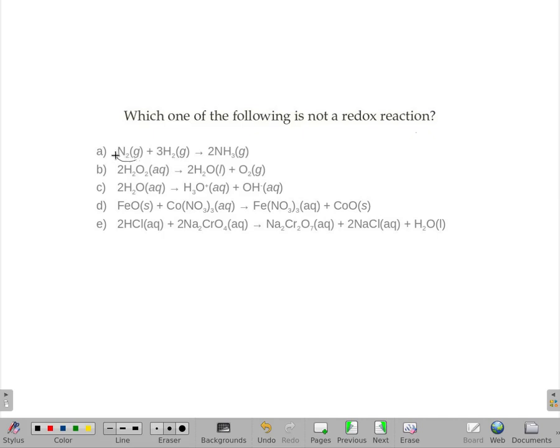So like on A, since I have nitrogen all by itself and then it's no longer all by itself, that must be a redox equation. So I'm going to go through it. Anything that has an element all by itself, I can go ahead and mark that off because the only way that's going to happen is if redox occurs.